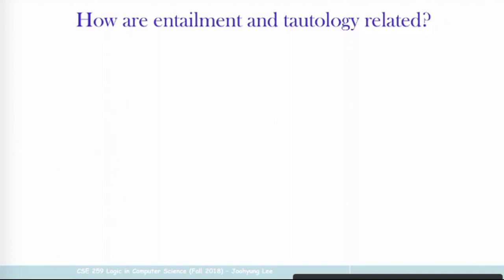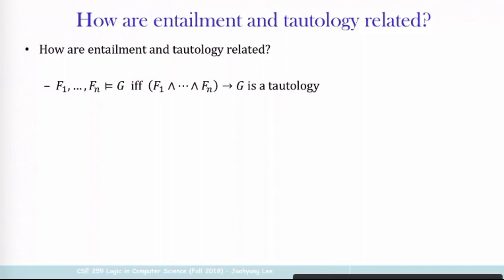The next one is how entailment and tautology are related — somebody actually asked a question and I also posted the response on Piazza. When you say entailment, it means if you find any interpretation that satisfies these formulas, the interpretation must satisfy these formulas as well. Meaning that if this is true, then this must be true for all interpretations. You can rely on this proposition to understand entailment in terms of tautology: just make all formulas in the premises a conjunction, and if that implies the conclusion — if that implication itself is a tautology — then you can say the entailment is true.